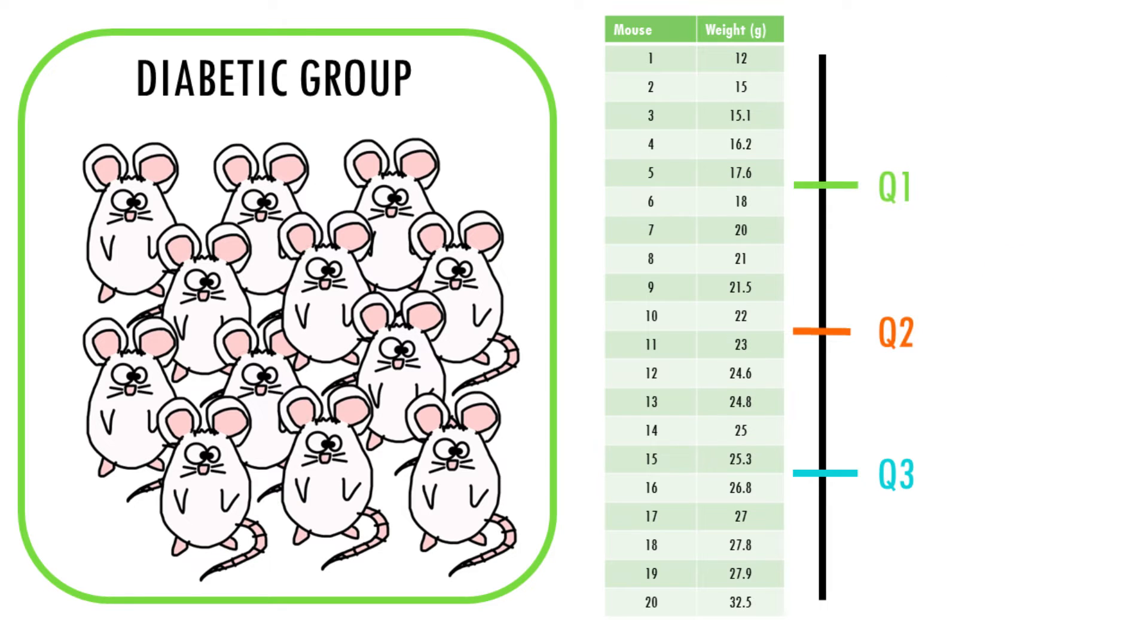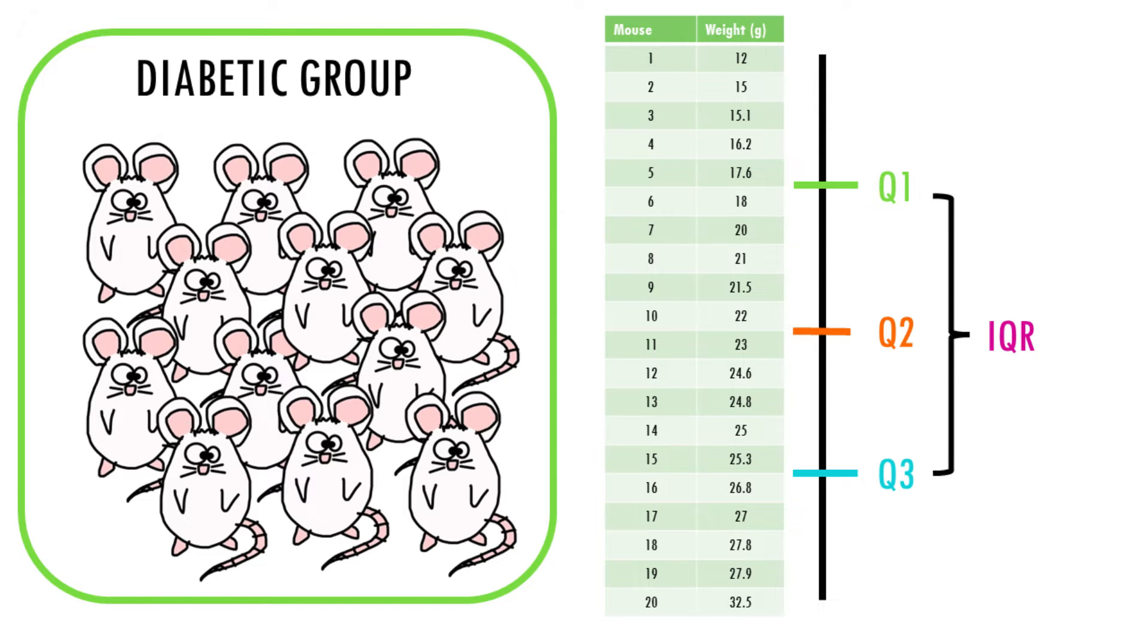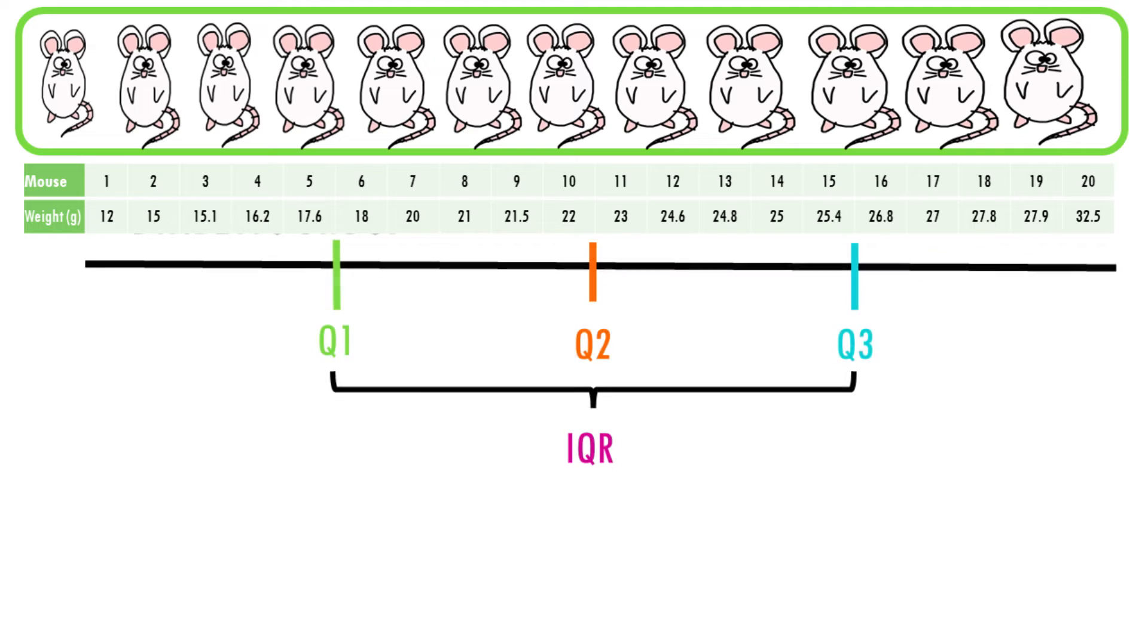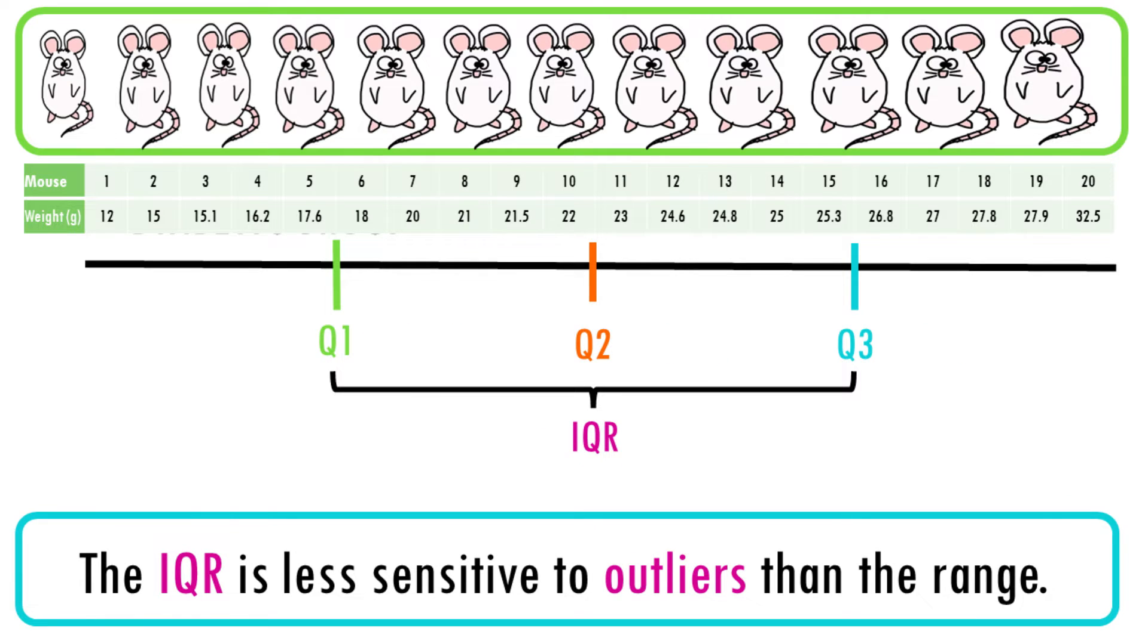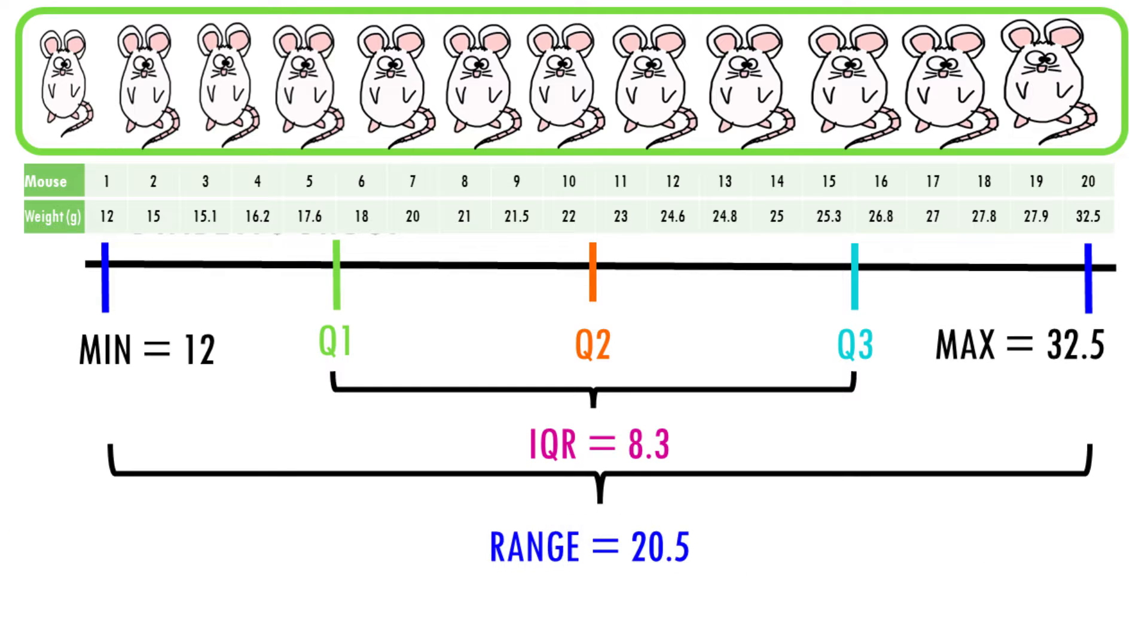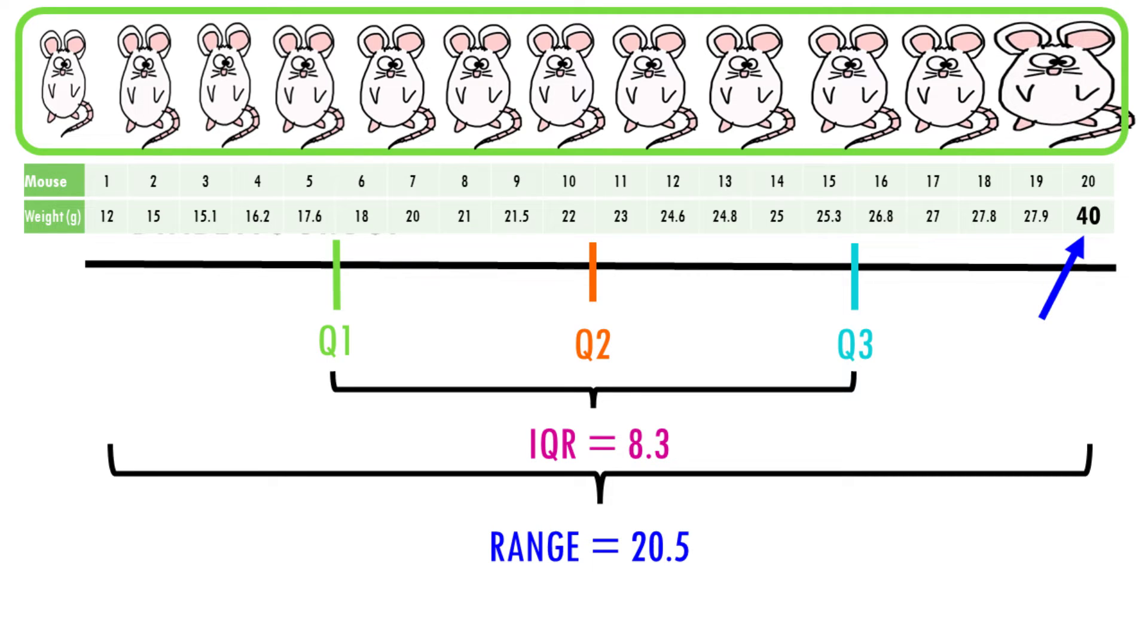The interquartile range, IQR, is the difference between the third and the first quartile. It represents the spread of the middle 50% of the data and is often used as a robust measure of variability. It's less sensitive to outliers compared to the range, which goes from minimum to maximum. So if you have a really high value in your data set, in other words a very heavy mouse, then the range will be really affected because it's taking the minimum and the maximum. But the interquartile range will probably not change very much because it's just taking the variability of the middle 50% of the data.